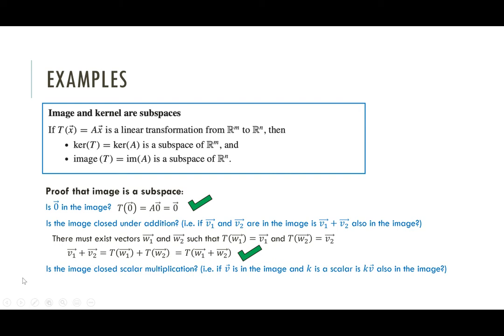How about scalar multiplication? If we have some vector v in the image, is kv also in the image? Well, just as before, if v is in the image, some element w gets mapped to it. So there has to be some vector w, such that t of w is v. And then, all right, let's consider k times v. We want to show, is this in the image? Well, k times v is equal to k times t(w) from what we just said. And then because the transformation is linear, scaling the transformation is the same as taking the transform of the scaled vector. So, yes, turns out image really is a subspace. Good. Your book didn't lie to us.